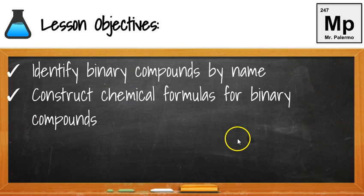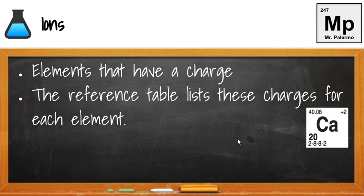When we discuss things like ions, these are elements that have a charge associated with them. In the reference table, there's a list of charges in the upper right hand corner of the element box. So for calcium, the charge is plus 2. We'll have positive and negative charges, or positive and negative ions.